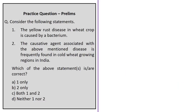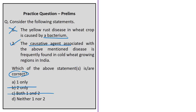The next question is about yellow rust disease. Statement 1 states yellow rust disease in wheat crop is caused by a bacterium — this is incorrect because it is caused by a fungus called Puccinia. Statement 2 states that the causative agent is frequently found in cold wheat-growing regions in India — this is correct, as this fungus is frequently found in cold wheat-growing regions, particularly in parts of Punjab and Haryana. This is why yellow rust is not reported in central and southern India. The correct answer is Option B — Statement 2 only.